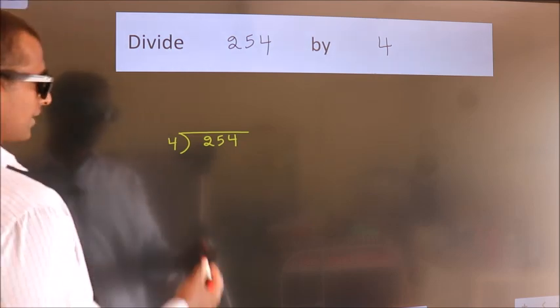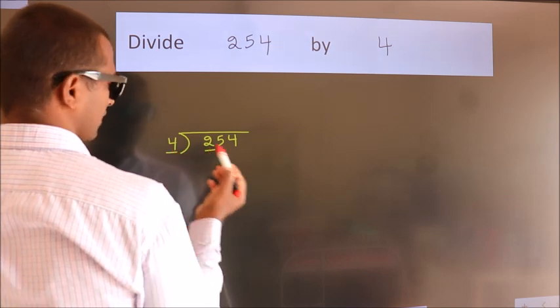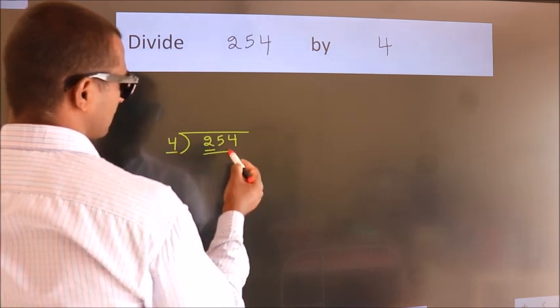Next, here we have 2, here 4. 2 smaller than 4, so we should take 2 numbers: 25.